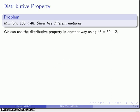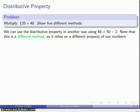Now, here's another way I might approach it. I could use the distributive property in another way, using the fact that 48 is 50 minus 2. Now, as a note here, as far as a different method, we're actually relying on a different property of our numbers. So, in the previous method, we used the fact that 48 was 40 and 8. Here, we're using the fact that, which is an addition. Here, we're using a different property, which is that I can express 48 by a subtraction. So, this would actually count as a different method.